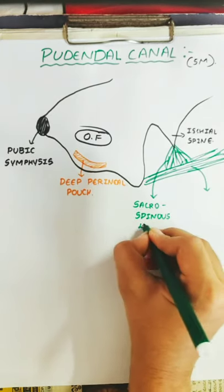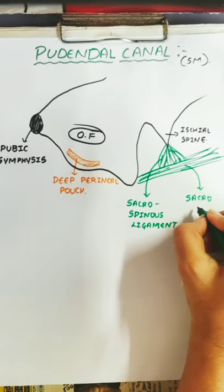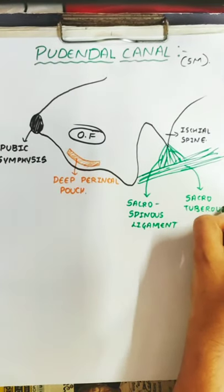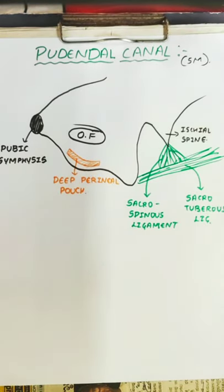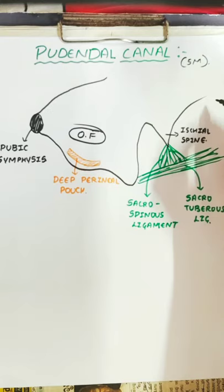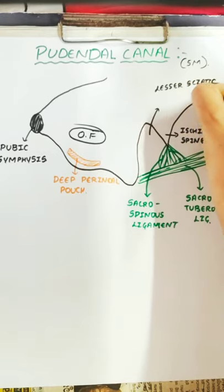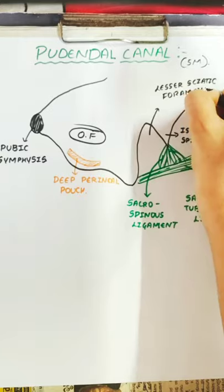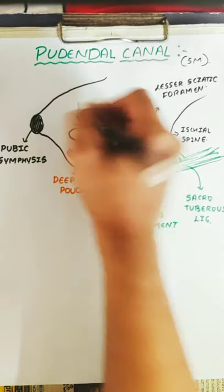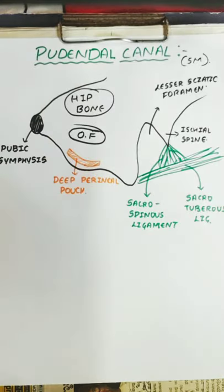So we have the sacrospinous ligament as well as the sacrotuberous ligament. We are done with the two ligaments. This space is called the lesser sciatic foramen and this other space is called the greater sciatic foramen. This whole structure here is the hip bone.